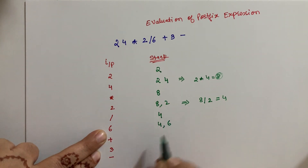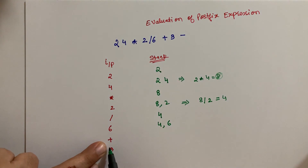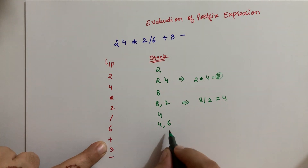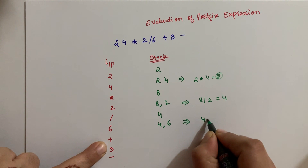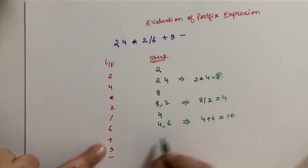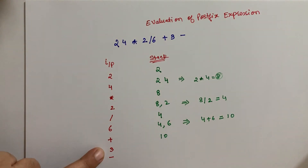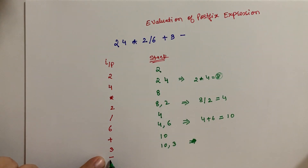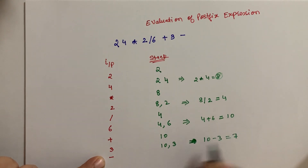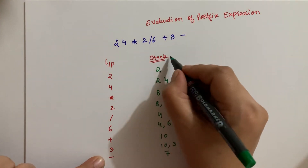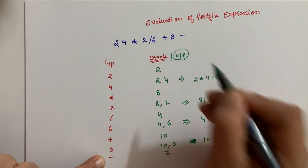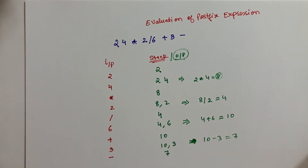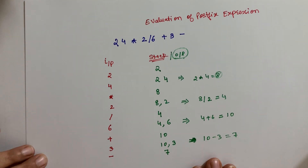Then the plus operator comes — both pop out, and 4 plus 6 equals 10. So 10 goes into the stack. Then 3 comes — stack has 10, 3. Next operation is subtraction — so 10 minus 3 equals 7. So your result is 7. We are showing stack and output both in the same column. This was your postfix evaluation.